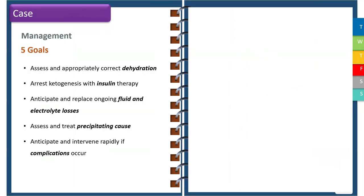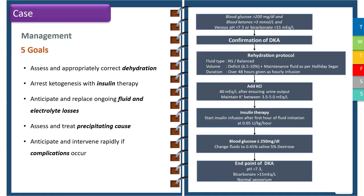The key management principles include assessing and appropriately correcting dehydration, arresting ketogenesis with initiation of insulin therapy, anticipating and replacing ongoing fluid and electrolyte losses, assessing and treating precipitating causes, and anticipating and intervening rapidly if complications occur. It is important to form a local unit-based protocol when managing children with DKA. When hyperglycemia, ketosis, and acidosis are confirmed, we start the rehydration protocol with isotonic fluids.